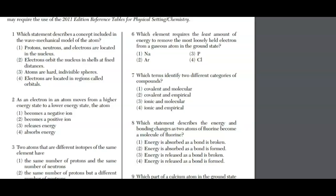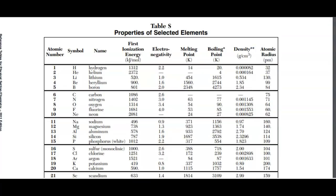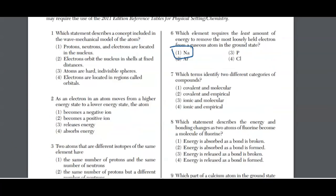For question six, which element requires the least amount of energy to remove the most loosely held electron from a gaseous atom in the ground state? This is the definition of ionization energy. You're going to go to reference table S. First ionization energies are right here. We're looking for sodium at 496, argon at 1521, phosphorus at 1012, and chlorine at 1251. Our answer is sodium, choice one.